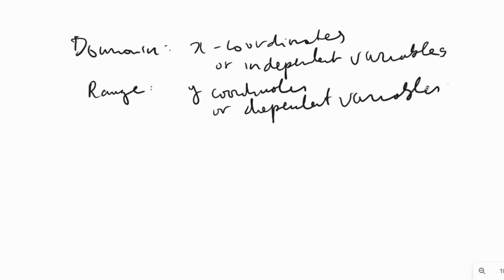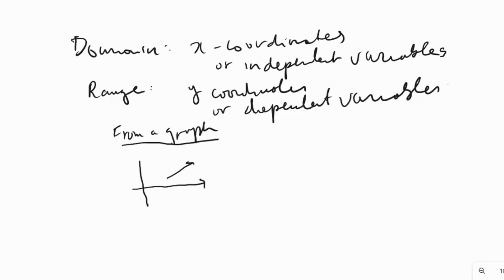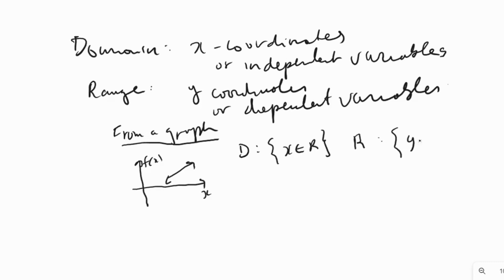We can find domain and range from a graph or from an equation. From a graph, for a straight line — a linear function — the domain is x belongs to all real numbers. Except for a vertical or horizontal line, the range is also y belongs to all real numbers. For example, y equal to 4 is a horizontal line.